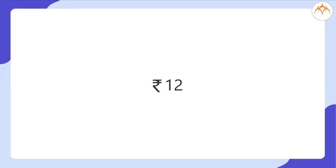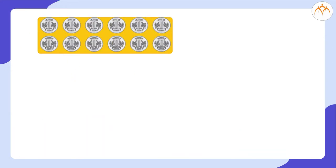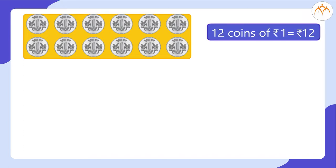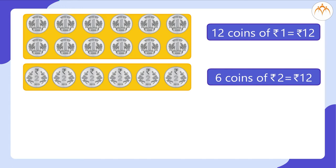If I tell you that I have got 12 rupees in my pocket, what different combinations of coins and notes would make 12 rupees? I can have 12 coins of 1 rupee each — 12 coins of 1 rupee is equal to 12 rupees. Or 6 coins of 2 rupees each — 6 coins of 2 rupees is equal to 12 rupees.